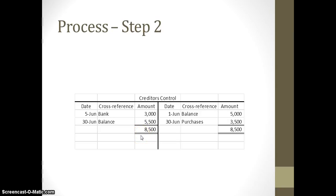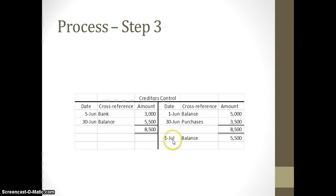We've essentially debited our creditors control, so we need to make sure that's a double entry. Our final step is to balance that ledger entry and carry our new balance forward to the next period. So we're starting the 1st of July with a balance in our creditors control account of $5,500.